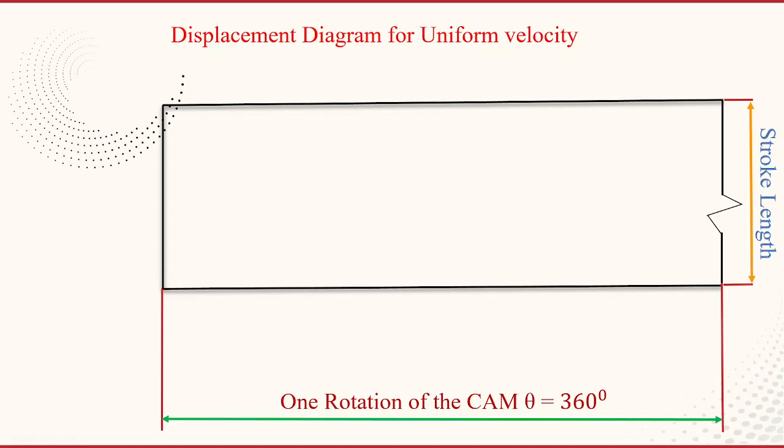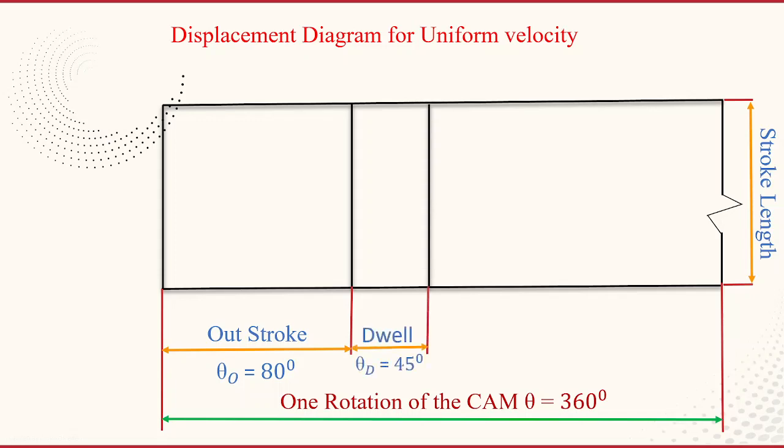Then divide this rectangle into the sequence of operations carried out. That is here in this problem is given outstroke, dwell, return stroke and dwell. Now mark the outstroke that is the angle is given 80 degrees. First 80 degrees, it's carried out the outstroke. Then 45 degrees is the dwell period.